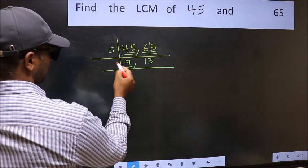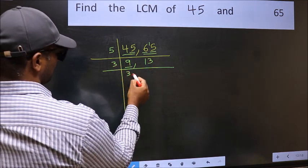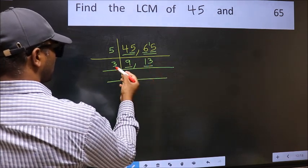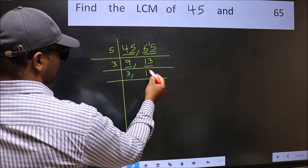Now here we have 9, 9 is 3, 3 is 9. The other number 13, not divisible by 3, so you write it down as it is.